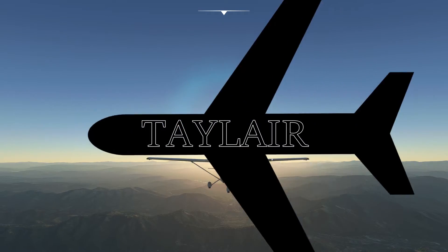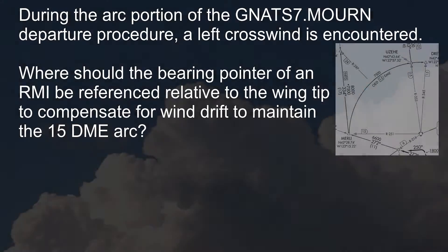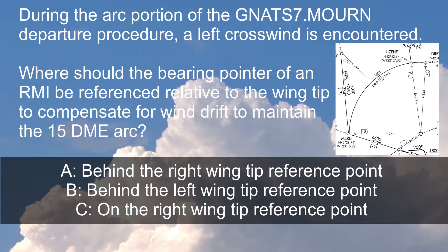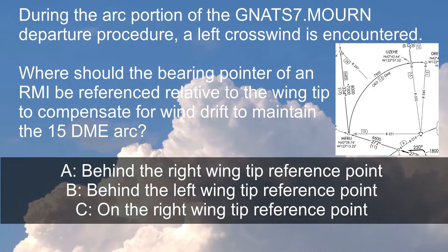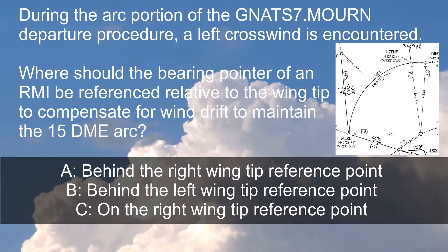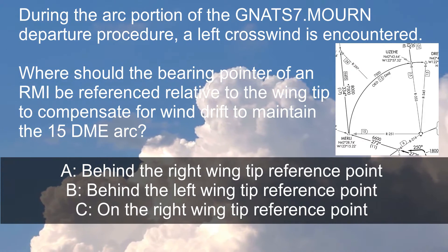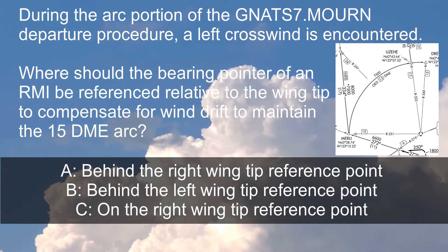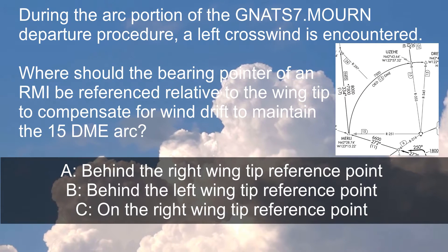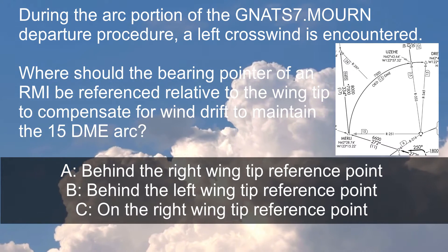It's time for another tail-air theory quickie. During the arc portion of the NAT7.MORN Departure Procedure, a left crosswind is encountered. Where should the bearing pointer of an RMI be referenced relative to the wingtip to compensate for wind drift to maintain the 15 DME arc?